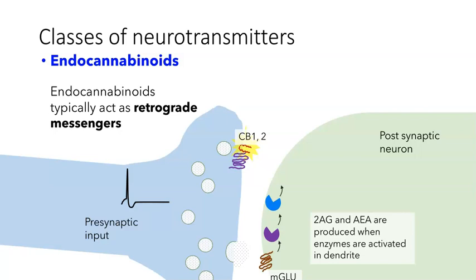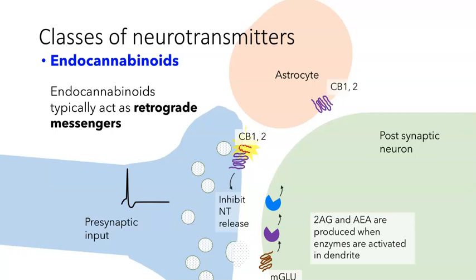These are called the cannabinoid 1 and 2 class of receptors, and as drawn you can see that they are members of the GPCR family. Typically, these then inhibit neurotransmitter release — so it's a bit of a feedback loop, feeding back in a retrograde manner onto the presynaptic neuron. The endocannabinoids can also diffuse away and interact with receptors on astrocytes and on other neighboring neurons, so they don't always act as a retrograde messenger, but typically that's the way we think about them working.